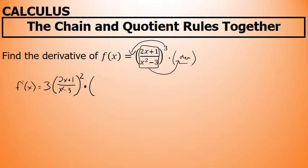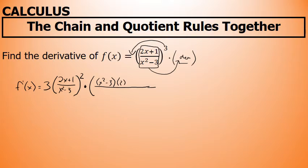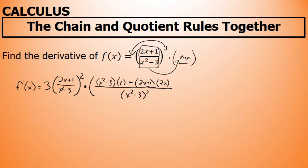The quotient rule is itself a quotient. The quotient rule states that the derivative of a quotient is a quotient, and in the numerator of that quotient is the original denominator unchanged — x squared minus 3 — times the derivative of the numerator, which is 2, minus the numerator unchanged, 2x plus 1, times the derivative of the denominator, which is 2x, all over the original denominator squared — x squared minus 3, in this case, squared.